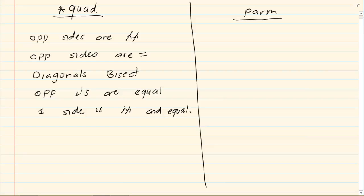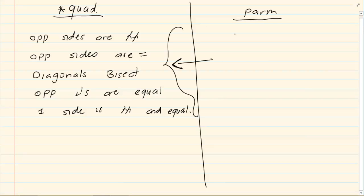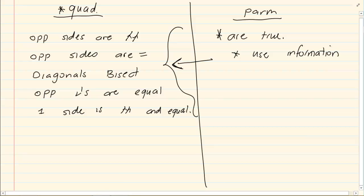Now if I give you a quadrilateral and you can prove that any of these five rules is true, then that would be a parallelogram. However, sometimes they would give you a parallelogram and they would ask you to prove that any one of these five are true. Now when they ask you to do that, you can use the information they give you, but you may not use what they want you to prove.